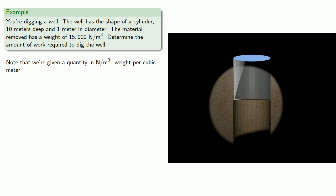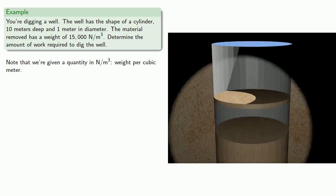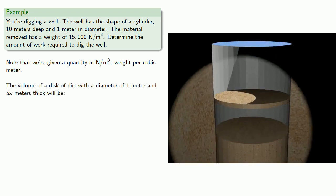So we note that we're given the quantity in newtons per cubic meter, and that's the weight per cubic meter, which means we need to know the volume of the dirt removed. So if we take that thin slice, the volume of a disk of dirt with diameter 1 meter and dx meters thick...